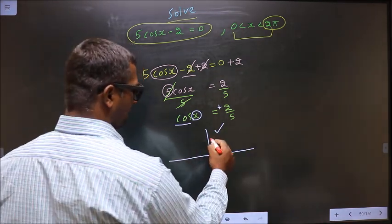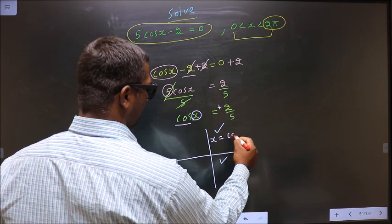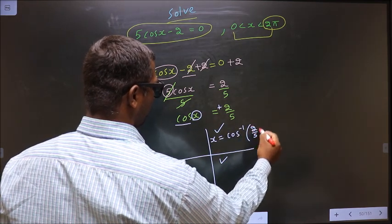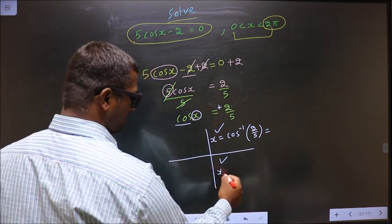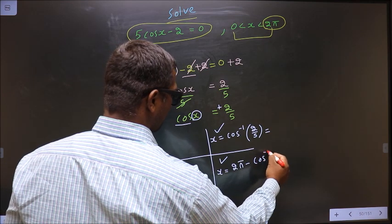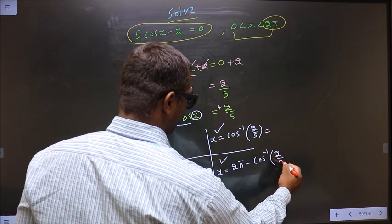Now to get an angle in the first, we do directly cos inverse 2 by 5. To get an angle in the fourth, we should do 2π minus cos inverse 2 by 5.